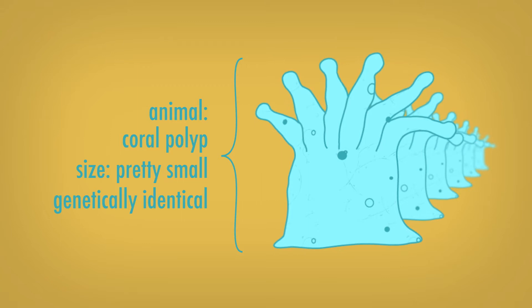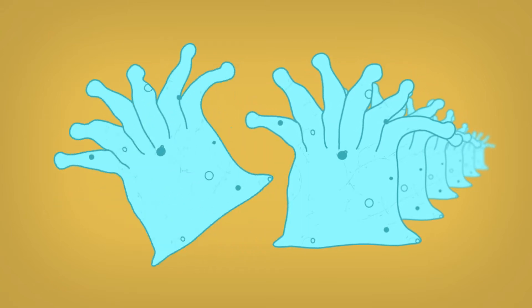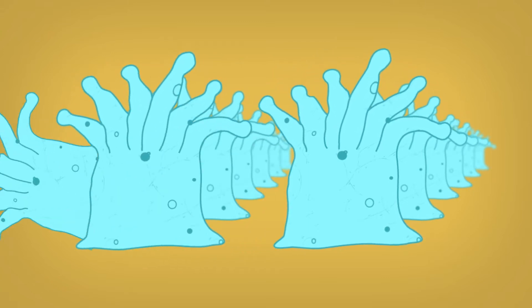Unlike identical twins though, a coral polyp simply makes a copy of itself to create a new sibling slash neighbor.